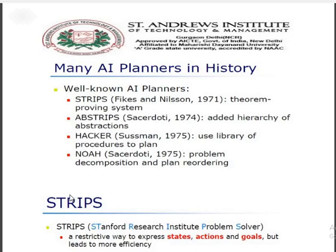The main planners discussed so far include STRIPS, AB-STRIPS, Hacker, and NOAH. These are like robots or artificial intelligence expert systems that have been developed, and many research scientists are still working on this field. STRIPS was developed by Fikes and Nilsson in 1971, using theorem-proving systems. AB-STRIPS added hierarchical abstraction to this method. Hacker was developed by Sussman in 1975, and NOAH has been utilized with problem decomposition and planning reordering sequences.